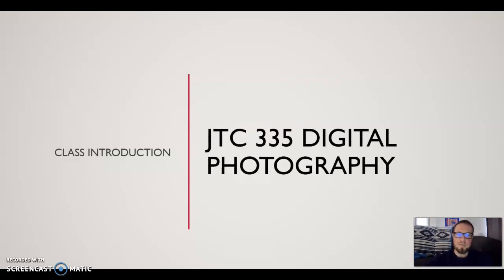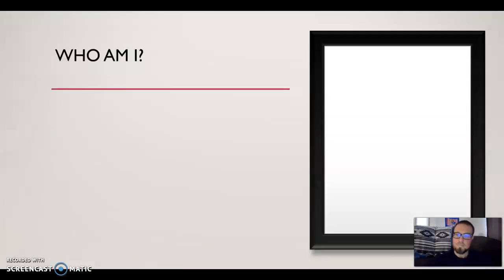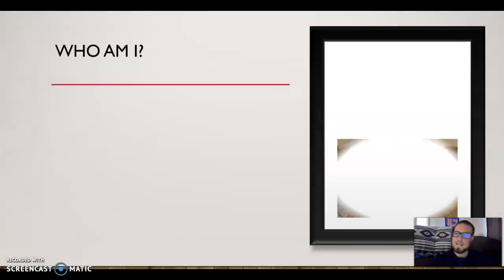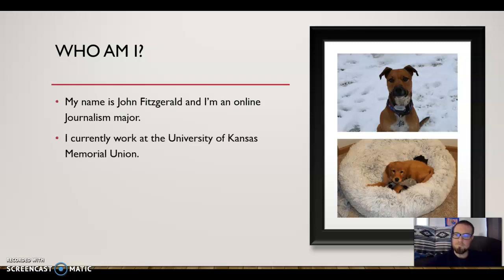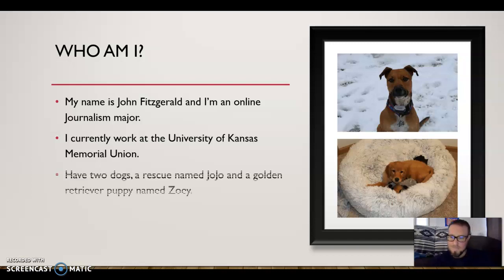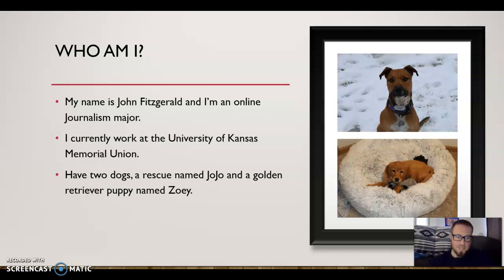Welcome to my JTC 335 digital photography class introduction. Who am I? My name is John Fitzgerald and I'm an online journalism major, currently a junior. I work at the University of Kansas Memorial Union. I have two dogs — a rescue named Jojo and a golden retriever puppy named Zoe. You can see their pictures to the right. Zoe is currently trying to chew everything she can put in her mouth, so I apologize if I seem distracted.